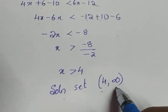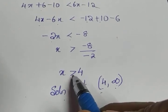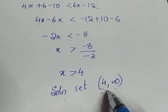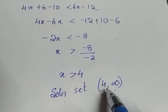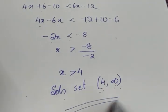Why is it open? Because it contains only greater than. If it was greater than or equal to, we would be putting a closed bracket here. Since it is x > 4, we are putting open interval (4, ∞). That is the solution set.